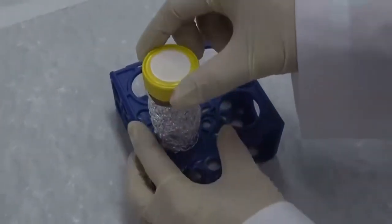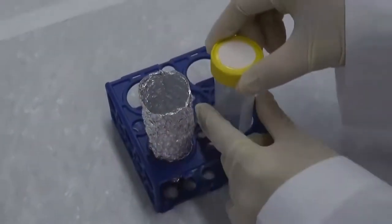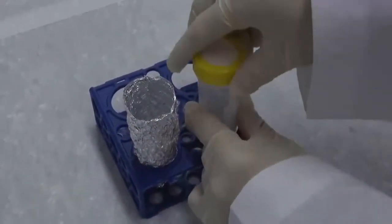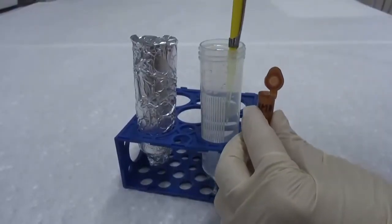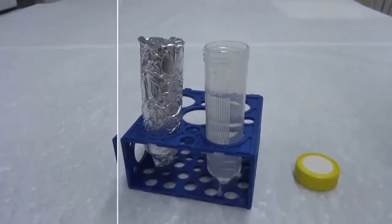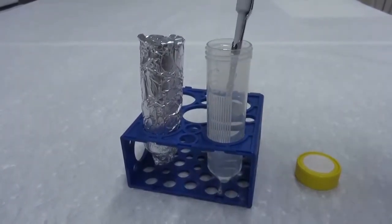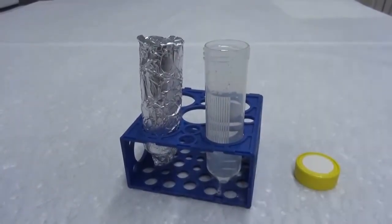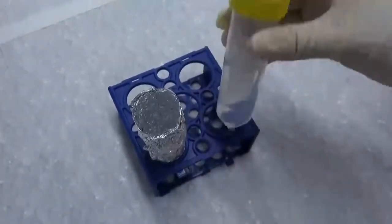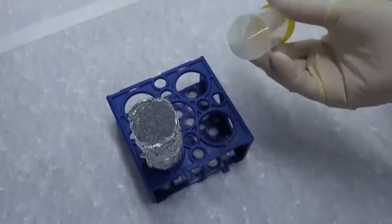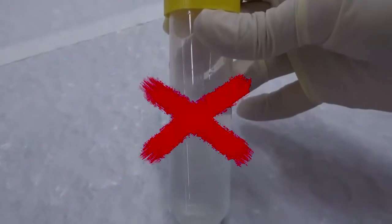To prepare the lower layer gel, take the centrifuge tube holding the lower layer gel solution and open the lid. Add proper volumes of TEMED and APS into the gel solution. When the temperature is low, the volume of APS may be doubled. Close the lid and gently invert the tube a few times to mix. Do not invert too hard. Otherwise, the SDS in the solution will generate bubbles which interfere with gel polymerization.